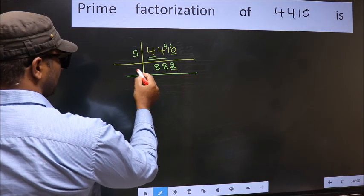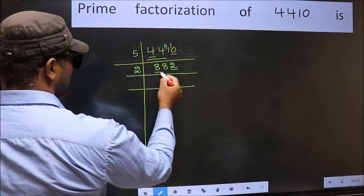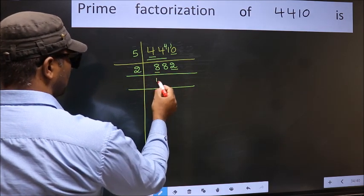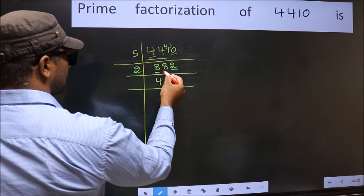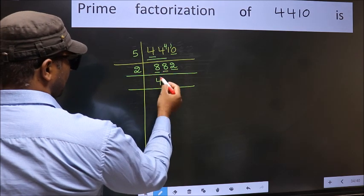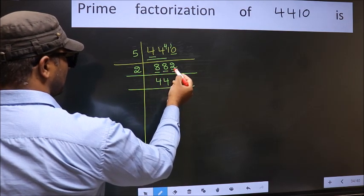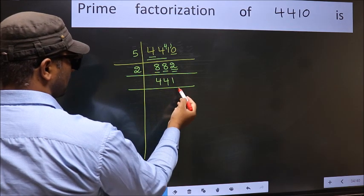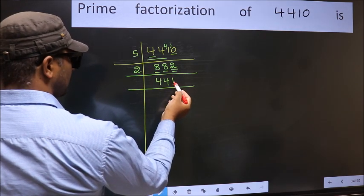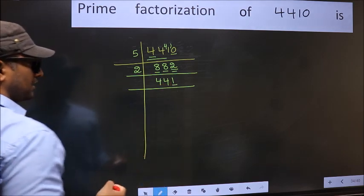The last digit is 2, which is even, so take 2. First number: 8. We get 8 in the 2 table as 2×4=8. The other number is 8; again 2×4=8. The other number is 2; 2×1=2. Now the last digit is 1, which is not even, so not divisible by 2.